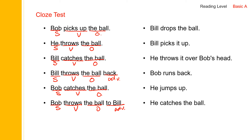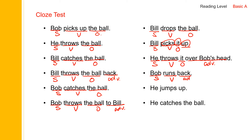Bill drops the ball — Bill is subject, drops is verb, the ball is object. Bill picks it up — subject, picks up is verb, it is object, up is part of the phrasal verb. He throws it over Bob's head — he is subject, throws is verb, it is object, over Bob's head is adverbial phrase. Bob runs back — Bob is subject, runs is verb, back is adverb. He jumps up — subject, jumps is verb, up is adverb. He catches the ball — subject, catches is verb, the ball is object.